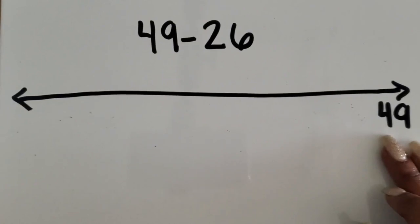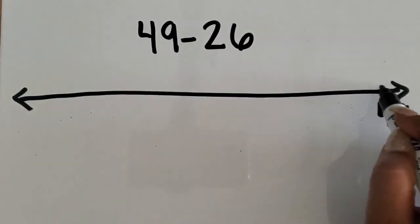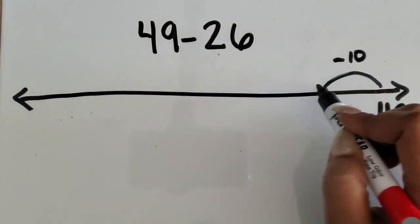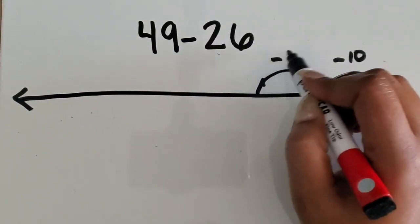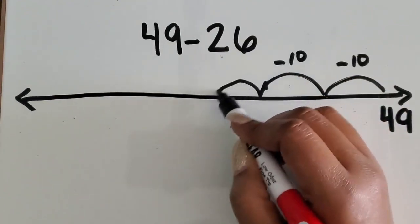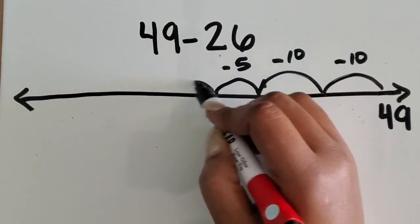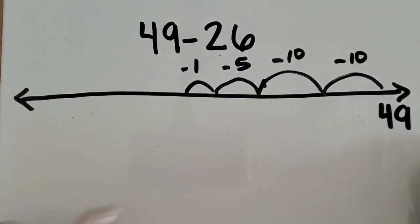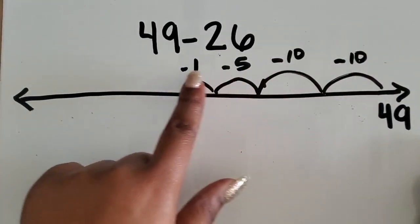We have our larger number here. We're going to subtract 26. I'm going to start by subtracting 10. Then I'm going to subtract 10 more. Then I'm going to subtract 5. Then I'm going to subtract 1. That makes 26. 10, 20, 25, 26.